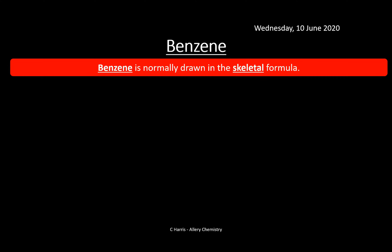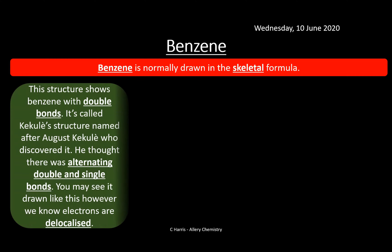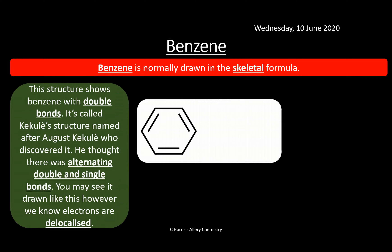Benzene is normally drawn in skeletal formula. The diagrams show the orbital shapes and how these orbitals blend together to form the delocalized structure. There are two ways to draw it. One way is what the exam board is more likely to accept, and the other is an alternative. I'll go through both.